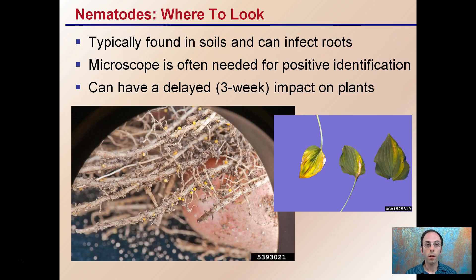Where to look for these? They're typically found in soils and can infect the roots, so that's usually the first area people look. A microscope is often needed for positive identification because they are so small for the most part. There are some that get quite large, but many of the parasitic ones that feed on plants are on the smaller end of that scale. They can also have a delayed — almost a three-week delay — impact on plants. So when we finally start to see negative effects, the initial infection could have occurred up to three weeks ago. This is in part why keeping records and documentation is so important.